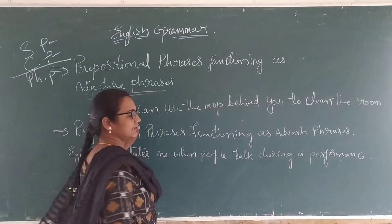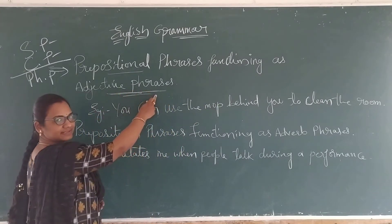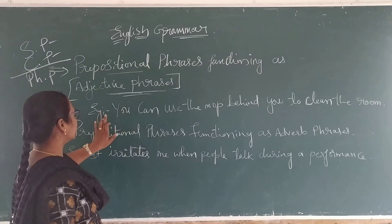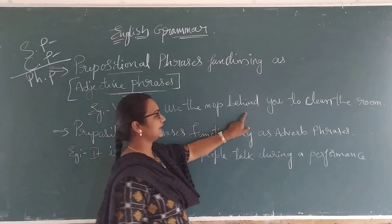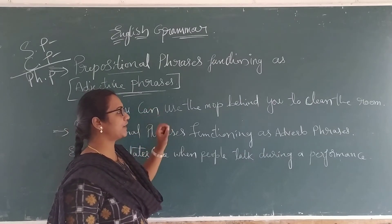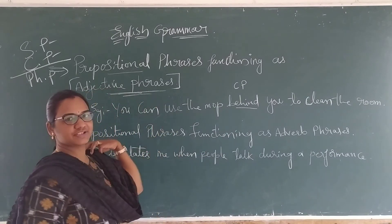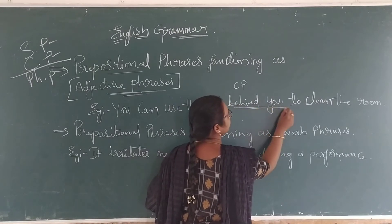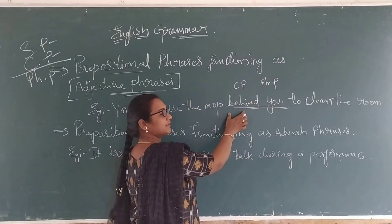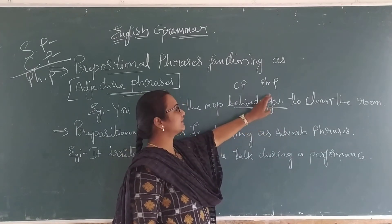Here I have taken a text example for prepositional phrases functioning as adjective phrases. They sometimes function as adjective phrases. For example: 'You can use the mom behind you to clean the room.' Here the compound preposition is 'behind.' Only 'behind' is called a compound preposition — it has two syllables. When we take 'behind you,' it is called a phrasal preposition.